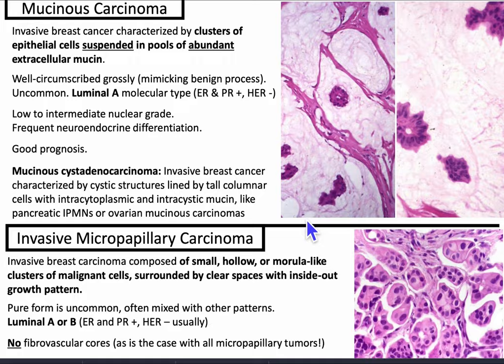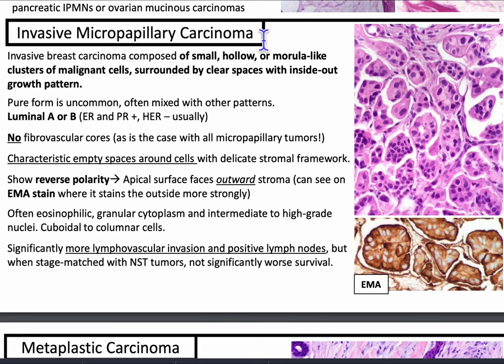Invasive micropapillary carcinoma is composed of small, hollow, or morula-like clusters of malignant cells surrounded by clear spaces with an inside-out growth pattern. The pure form is uncommon and often mixed with other patterns. It can be luminal A or B — ER and PR positive, HER2 negative usually. There is no fibrovascular core, as this is micropapillary by definition. They have characteristic empty spaces around the cells, show reverse polarity — the apical surface faces outward toward stroma — visible on EMA stain, which stains the outside more strongly. Often eosinophilic granular cytoplasm with intermediate to high-grade nuclei. There is significantly more lymphovascular invasion and positive lymph nodes, but when stage-matched with NST tumors, not significantly worse survival.